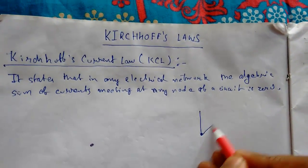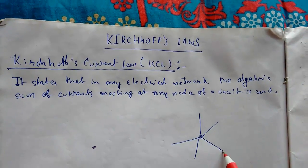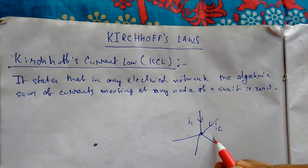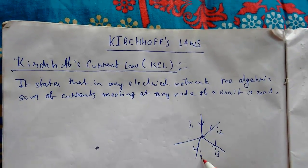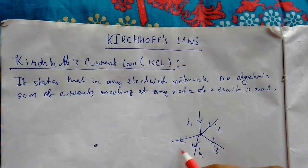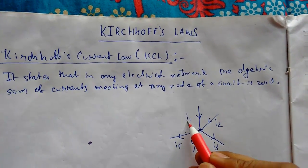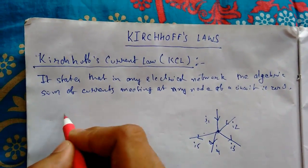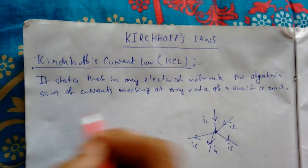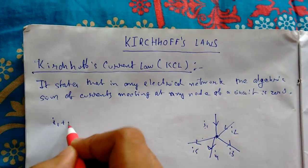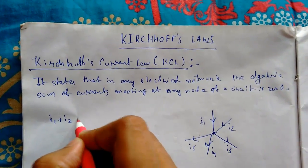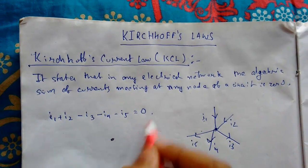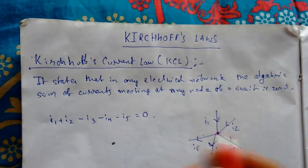To understand this, let me show you a node diagram. Suppose this is a node — currents are coming in: i1, i2 are entering, and i3, i4, i5 are leaving. According to Kirchhoff's current law, if we take current entering as positive, we write: i1 + i2 − i3 − i4 − i5 = 0.